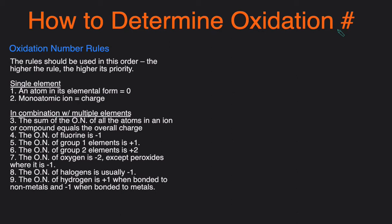Oxidation number is something you can use to keep track of the flow of electrons — to determine what's being oxidized and losing electrons, and what's being reduced and gaining electrons. I have the rules for oxidation numbers right here. These rules are ordered in terms of priority; higher up on the list means higher priority. So if two rules clash with each other, go with the one that's higher up on the list.